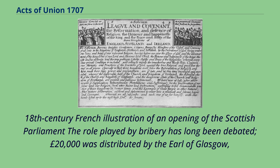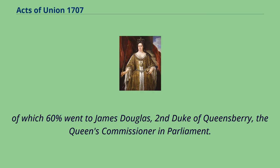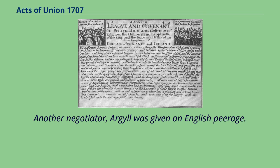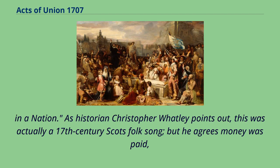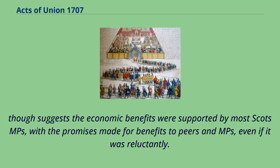The role played by bribery has long been debated. £20,000 was distributed by the Earl of Glasgow, of which 60% went to James Douglas, 2nd Duke of Queensbury, the Queen's Commissioner in Parliament. Another negotiator, Argyle, was given an English peerage. Robert Burns is commonly quoted in support of the argument of corruption: 'We're bought and sold for English gold, such a parcel of rogues in a nation.' As historian Christopher Watley points out, this was actually a 17th century Scots folk song, but he agrees money was paid, though suggests the economic benefits were supported by most Scots MPs, with the promises made for benefits to peers and MPs, even if reluctantly.